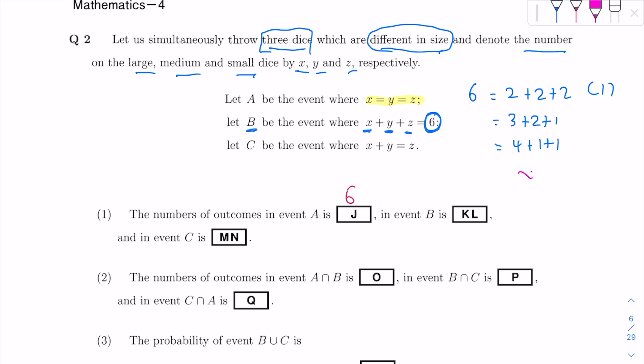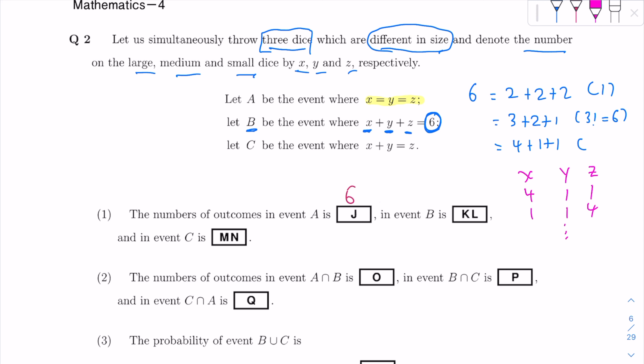For 3+2+1, there is more than one possibility. x could be 3, y=2, z=1, or x=1, y=2, z=3 — that's also valid since 1+2+3=6. The number of arrangements is 3 factorial, which is 3×2×1 = 6. For 4+1+1, you could have x=4, y=1, z=1, or x=1, y=1, z=4, and more. The number of possibilities is 3 factorial over 2 factorial, which is 3.